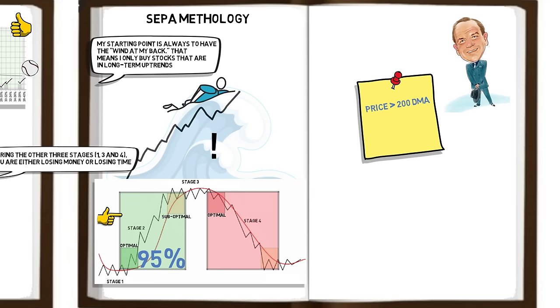The tight areas of consolidation are often accompanied by a decrease in volume. Such a pattern represents a period of equilibrium where supply of the stock has diminished. Shortly after, the demand outweighs the lack of supply and we see an increase of volume and price. In this example, the price later increased 465% in just 10 months.